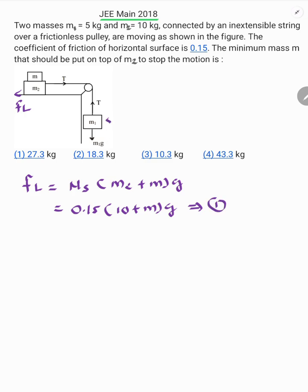Here M1 is given as 5 kg, so M1g equals 5 into g. If FL is equal or greater than M1g, then and only then there is no motion.